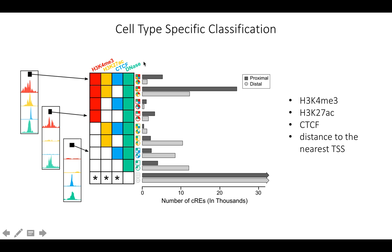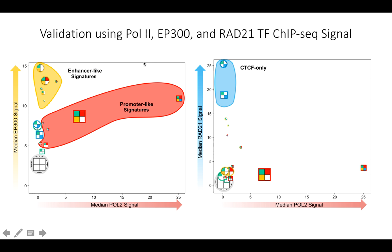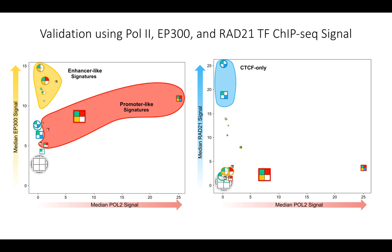To simplify these signal combinations, we looked at complementary signals for POL2, EP300, and RAD21 to see if these groups clustered into naturally forming groups. EP300 is a transcription factor known to bind enhancers — we had a group with really high EP300 signal, which we classified as enhancer-like. We had another natural group with really high RAD21 signal; RAD21 tends to co-localize with CTCF, particularly at the anchors of chromatin loops. Then we had groups with very high POL2, presumably near transcription start sites, which are promoter-like.